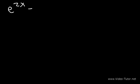Now it's your turn. Try this example: e to the 2x minus 3 times e to the x minus 28, all equal to 0. Go ahead, take a minute, pause the video, work on this example, and then unpause it to see if you have the right answer.